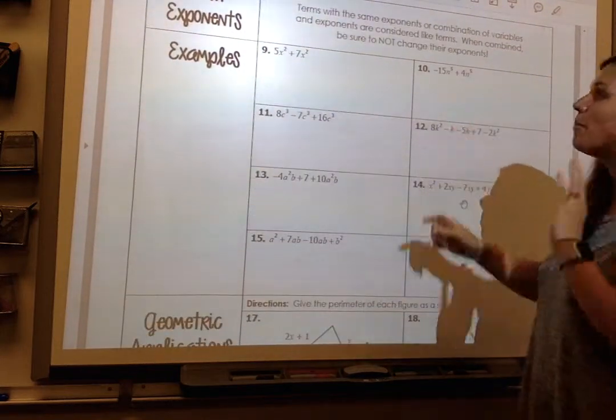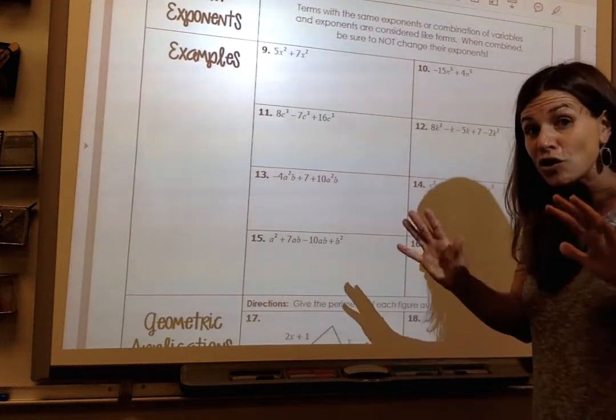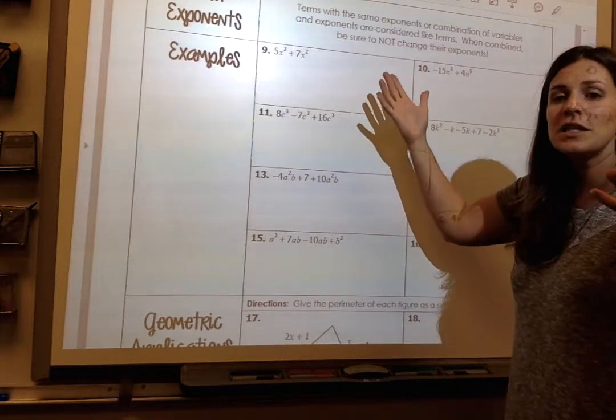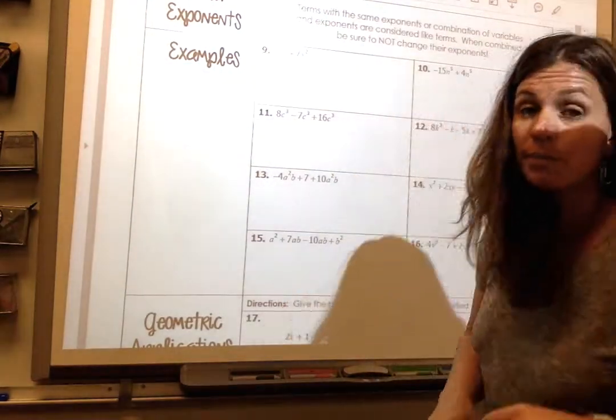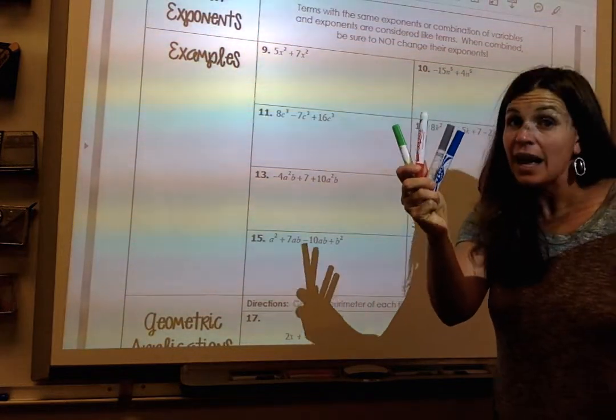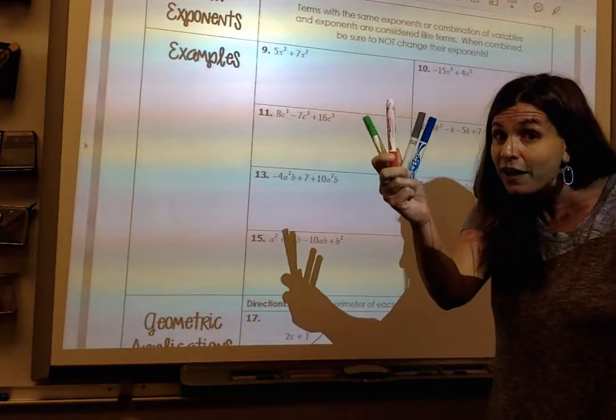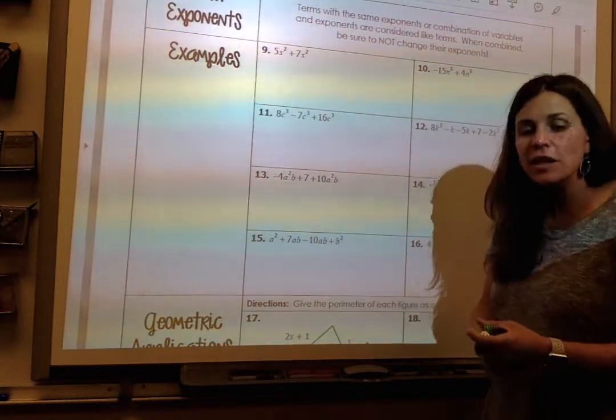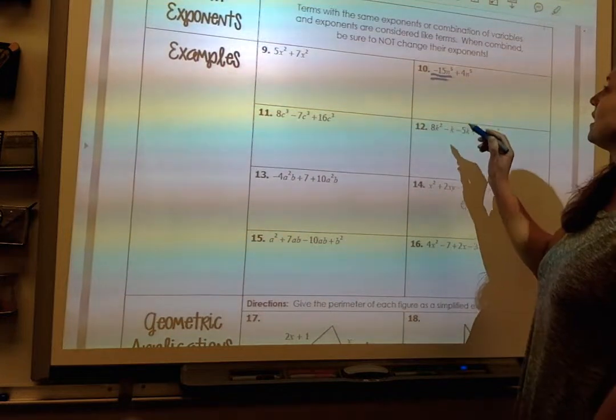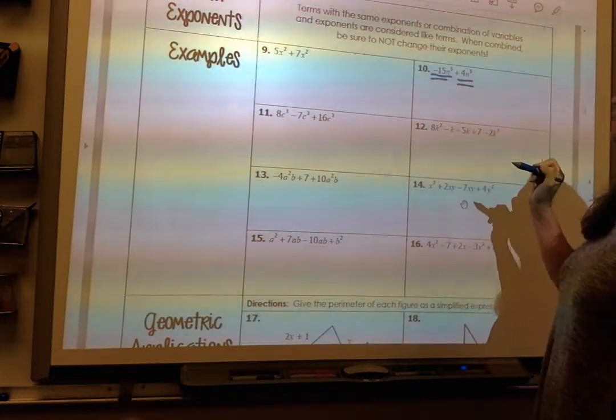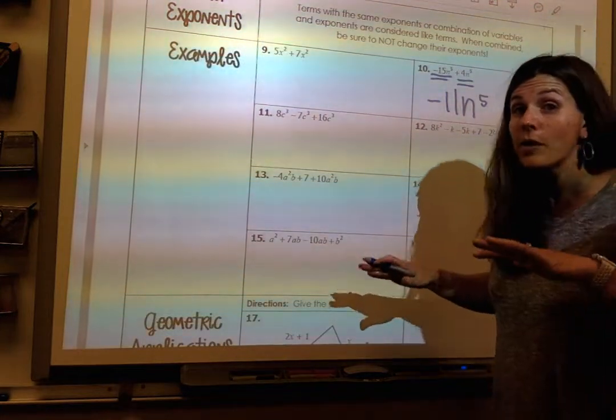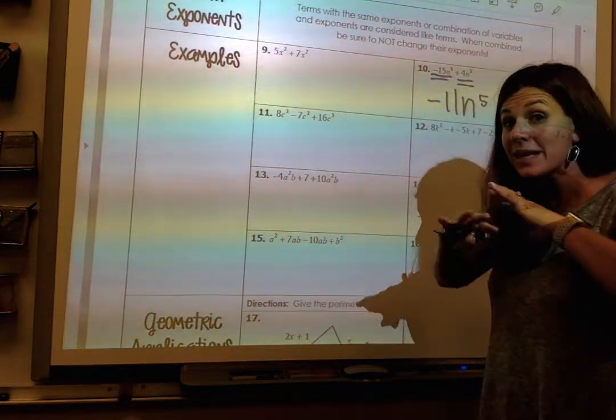Same thing when we talk about exponents. My exponents don't change when I'm adding. Let's say that n to the 5th stood for a marker. Well, if I have 4 n to the 5ths, I still have 4 n to the 5th. It doesn't change. My exponent doesn't change when you combine. So here, I have negative 15 n to the 5th, positive 4 n to the 5th, and it gives me a negative 11 n to the 5th. My exponent stays the same. It cannot change.